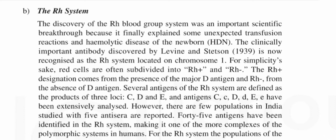For simplicity's sake, red cells are often subdivided into Rh-positive and Rh-negative. The Rh-positive designation comes from the presence of the major D antigen, and Rh-negative from the absence of the D antigen. Several antigens of the Rh system are defined as the product of three loci: C, D, and E; and antigens C, c, D, d, E, and e have been extensively analyzed.